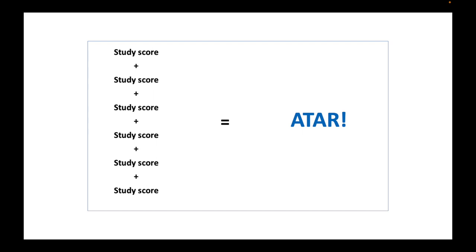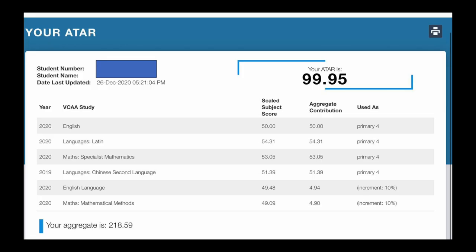Now let's have a look at the second diagram. As a reminder, the scaled study scores for each subject are added up, and those contribute to the student's ATAR. This diagram is best explained through an actual results page, so I'll show you one now. To orient yourself: on the left you have all the subjects, on the right you have the scaled subject scores — you will receive the raw scores as well, but for this page we'll concentrate on the scaled subject scores. We'll ignore the ATAR score for now and focus on the total score at the bottom of the screen.